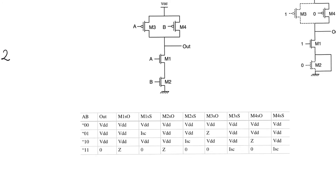The normal truth table of the two-input NAND gate includes the first two columns. When the input is 00, the CMOS gate produces an output of VDD. Same for 01 and 10. When the input is 11, the output is 0V. We're also going to fill in the truth table with columns for each of the four transistors being either stuck open or stuck short, and we need to look at how to expose these faults, because it's not as obvious as with the stuck-at fault model.